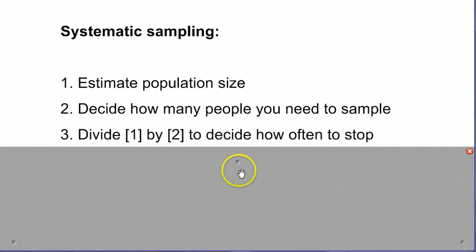The third thing is we're going to divide these two numbers to decide how often we need to stop someone. For example, if we have a thousand people in the population and we want to sample a hundred of them, we're going to take a thousand divided by a hundred, and we're going to have to talk to every tenth person to make that happen.